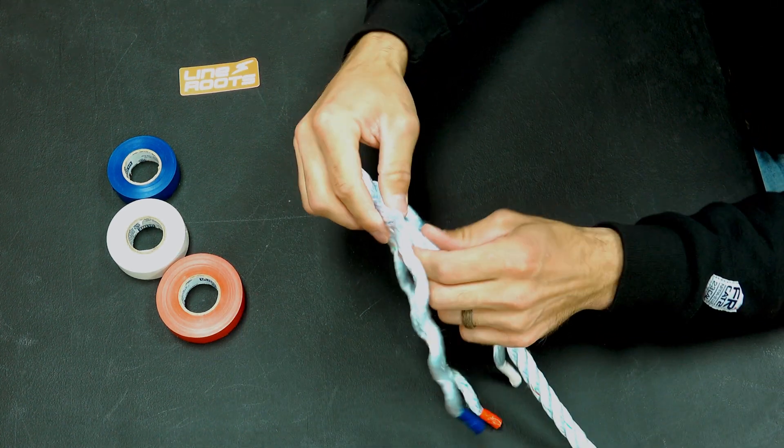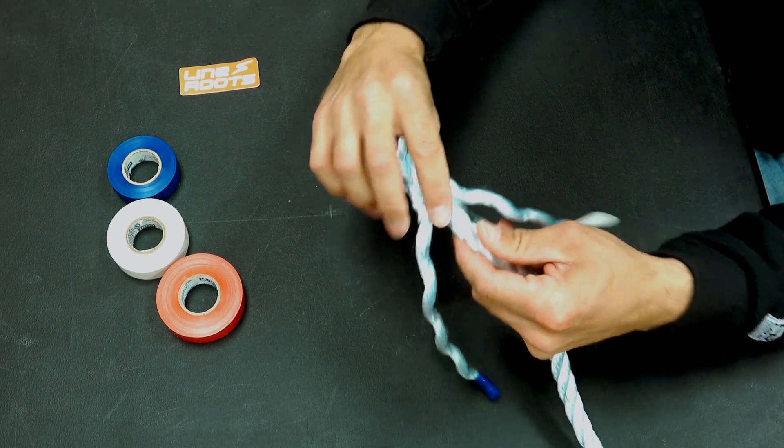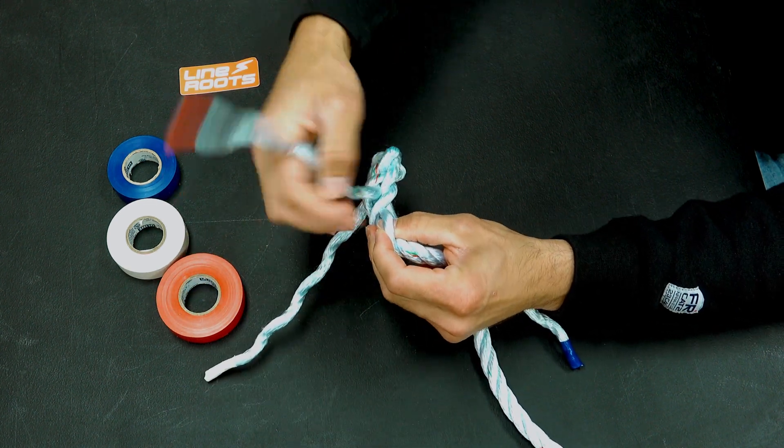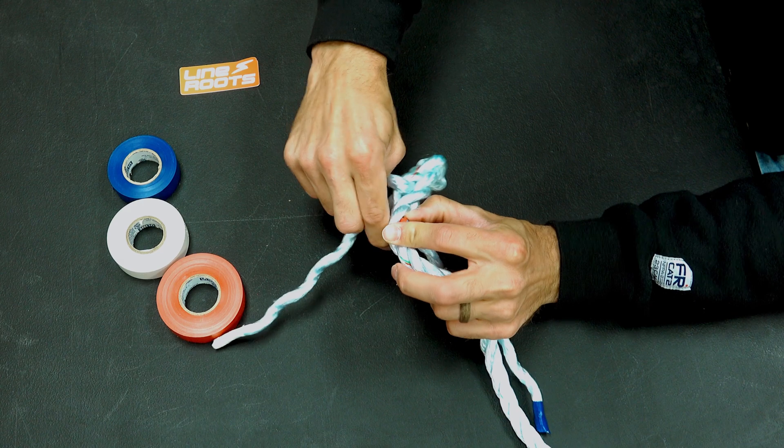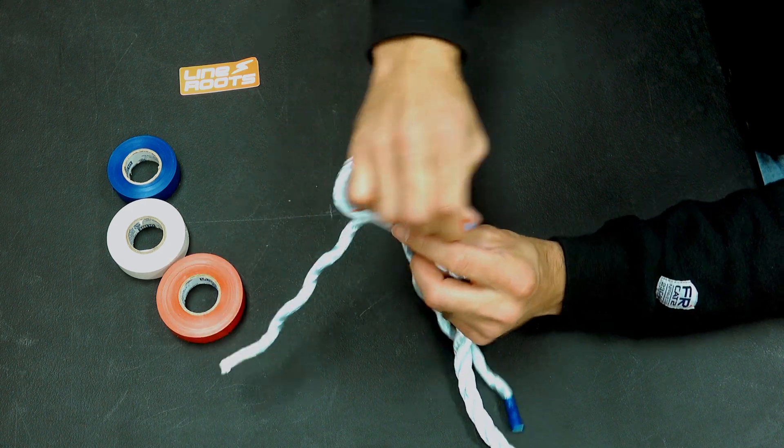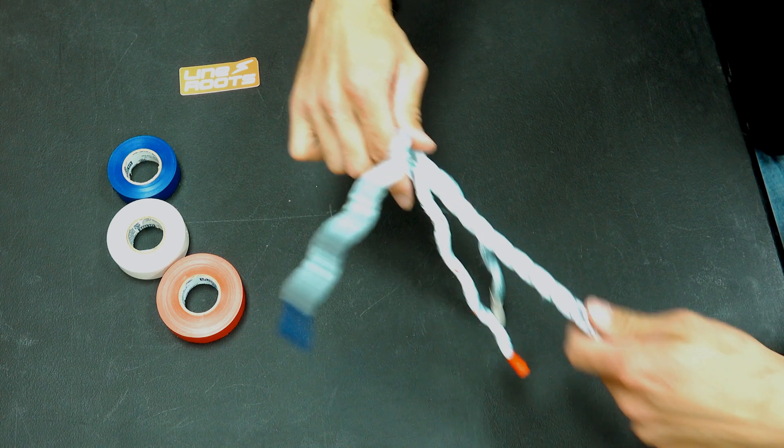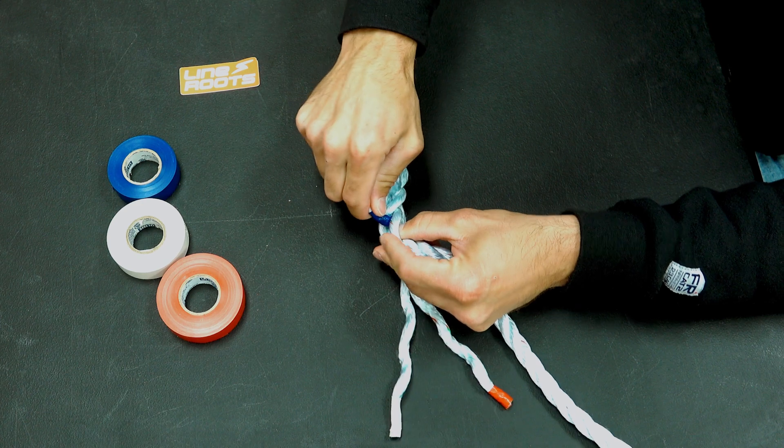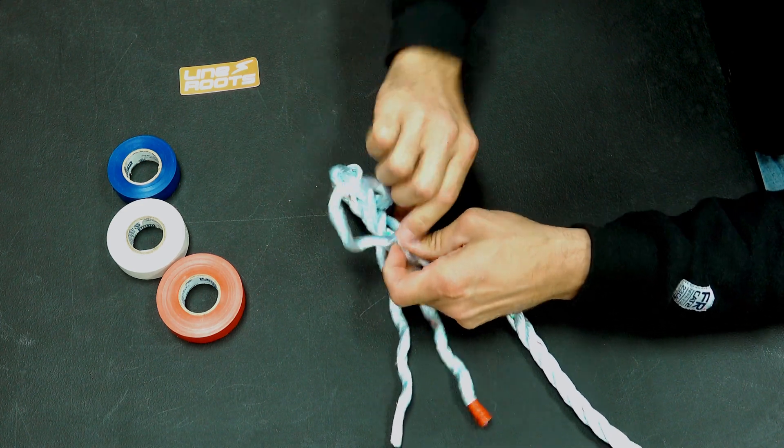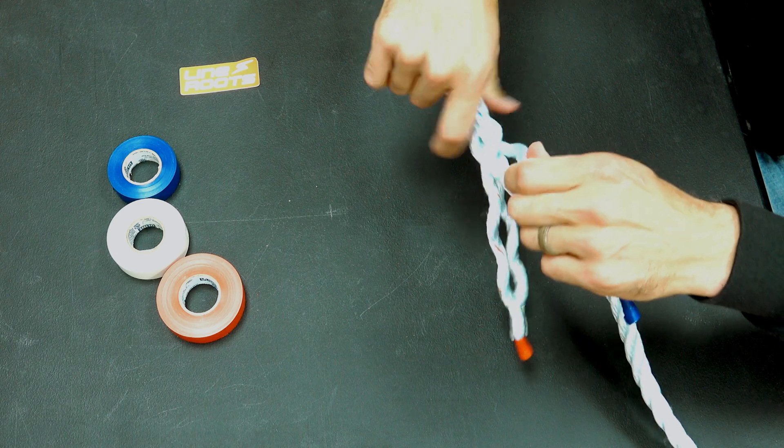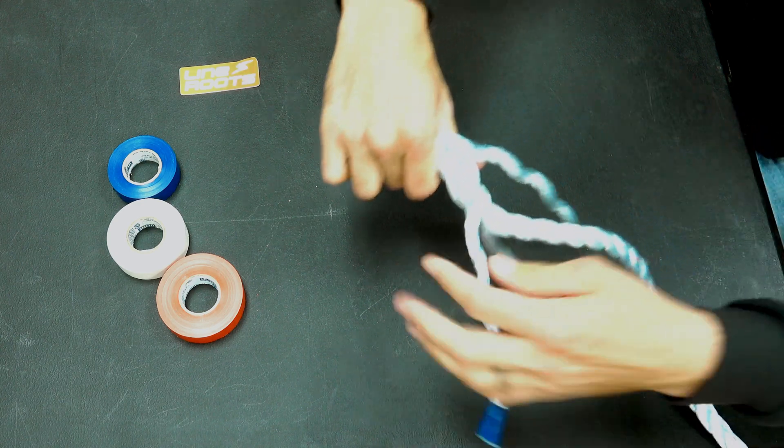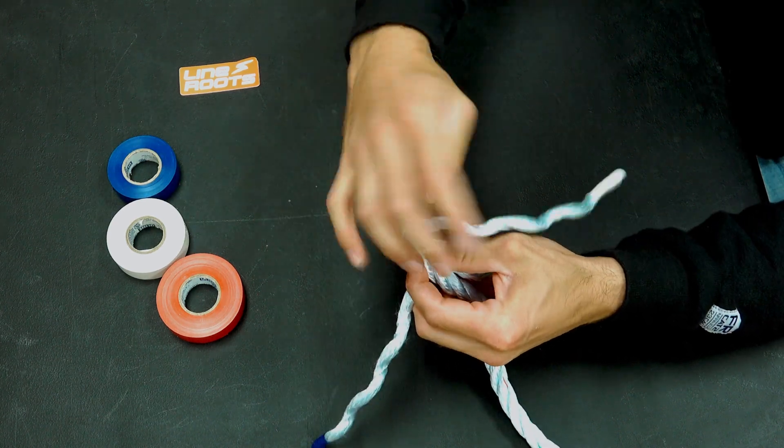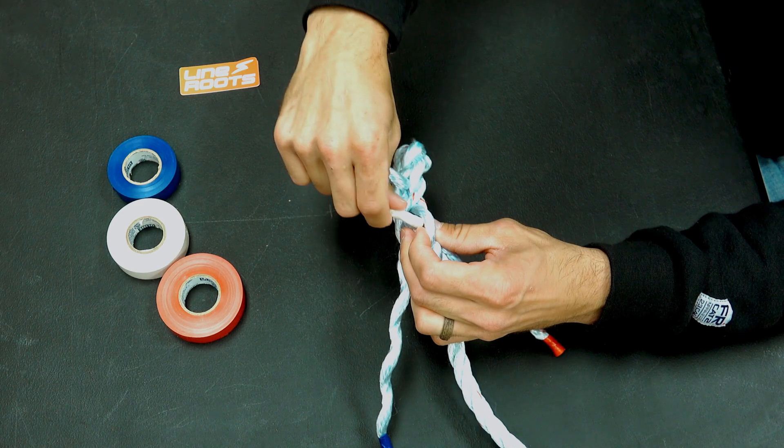Now we're ready to start tucking our other strands. I'm going to start with my red one. It's going to go up and over this strand underneath of this one. My blue I'm going to rotate clockwise again, up and over this strand and underneath of this strand.